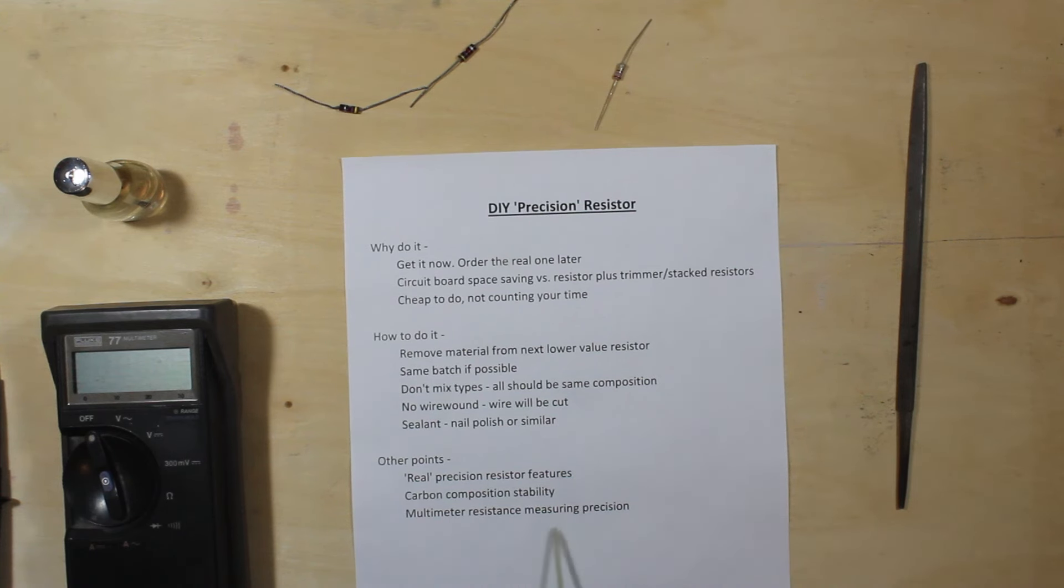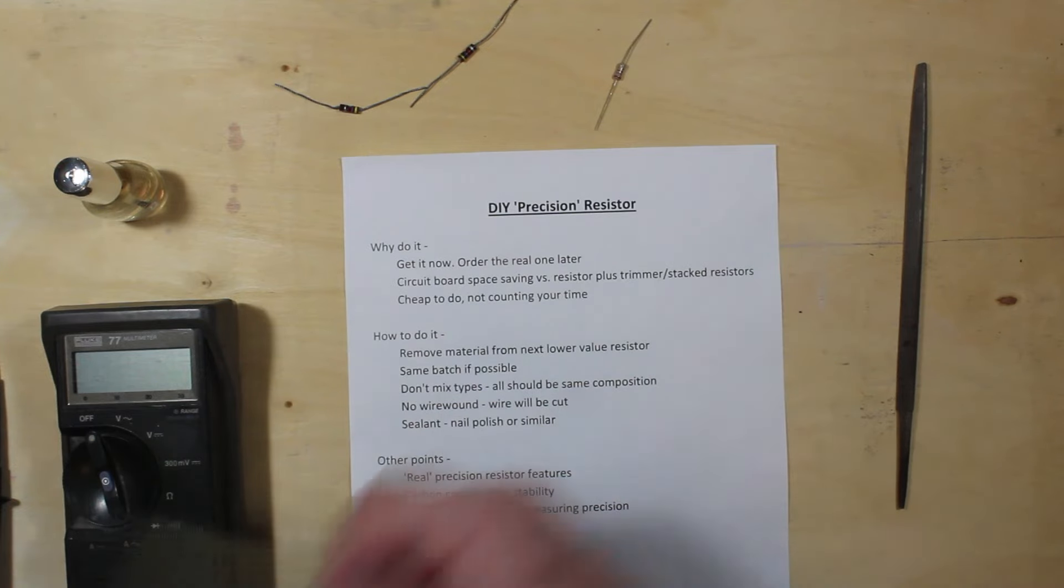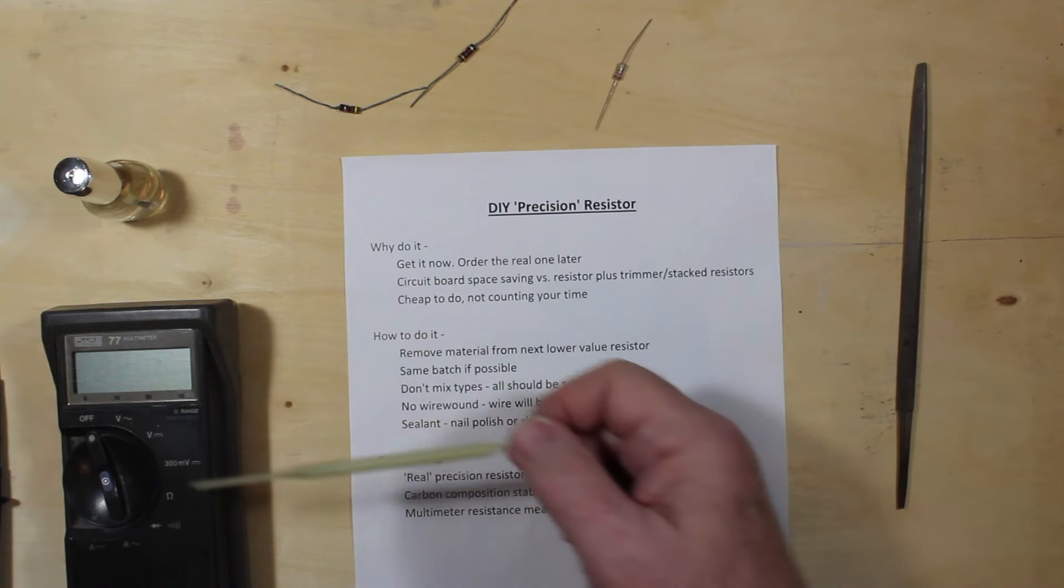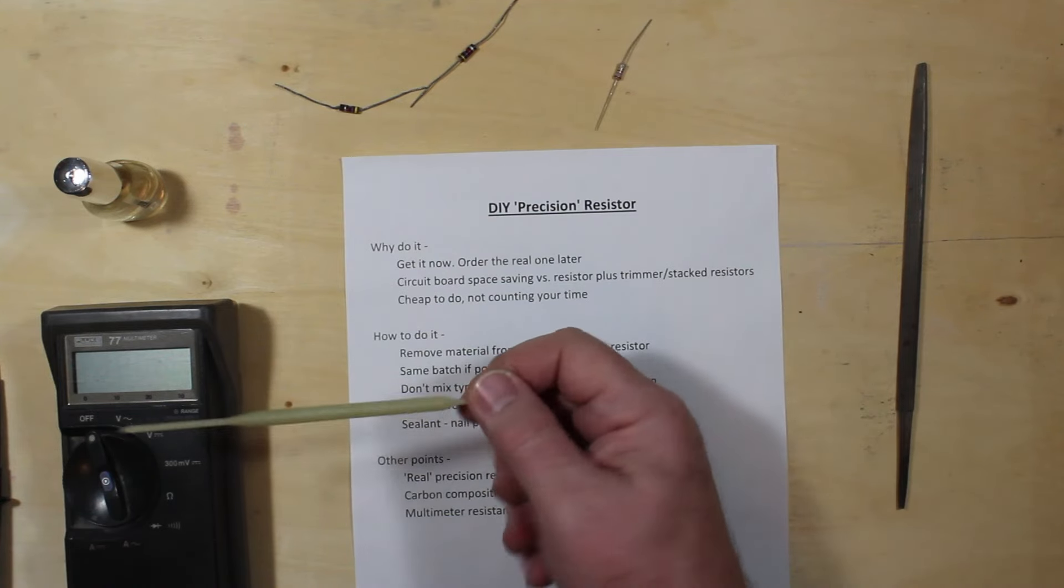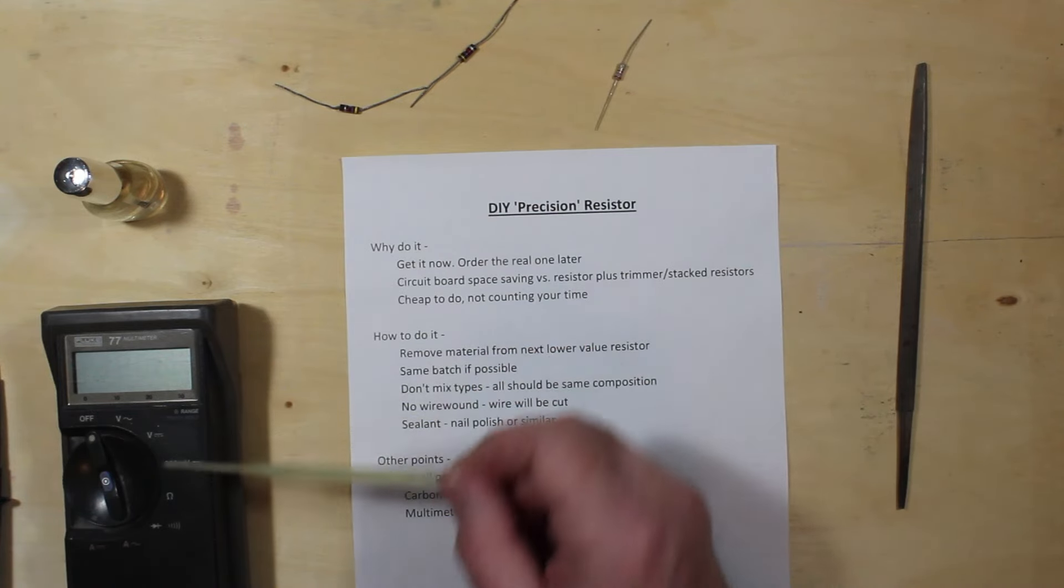And also be aware of your multimeter or your ohmmeter resistance precision. If you're really going for, like in my case, the 5K, this doesn't have a lot of zeros in the percentage of tolerance. This, I think, is half a percent or so for the old 7700s on resistance measurements.